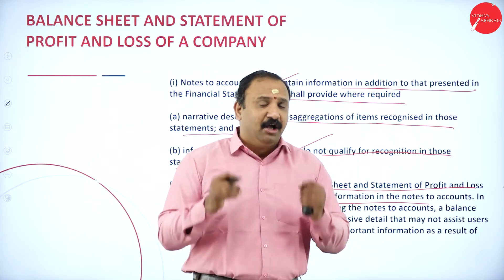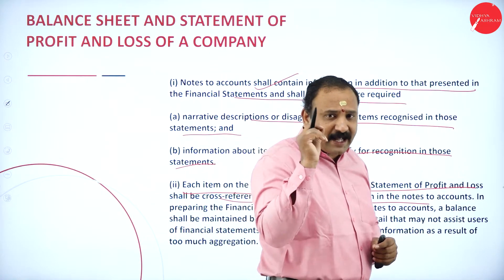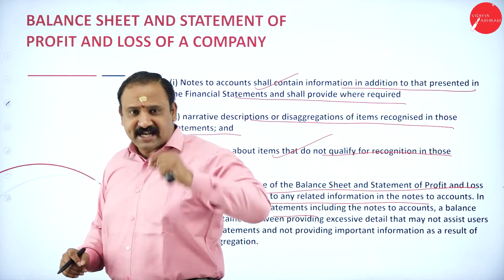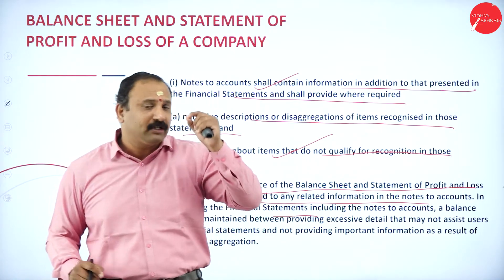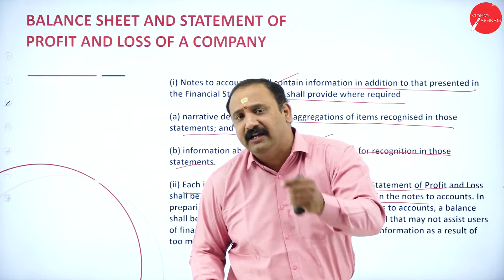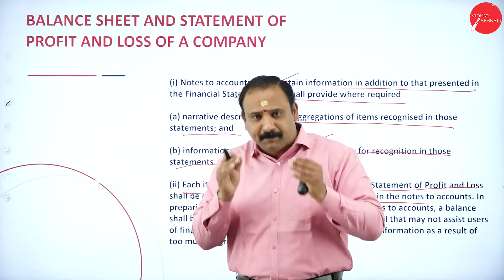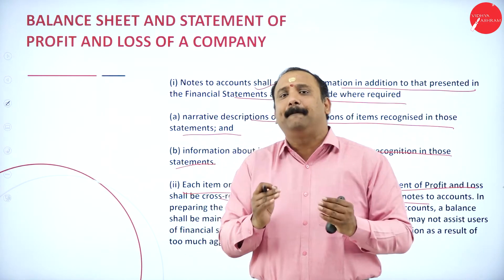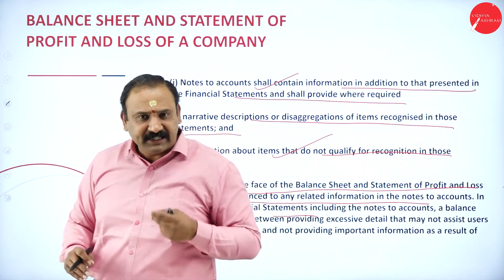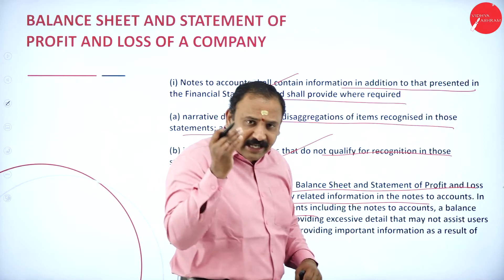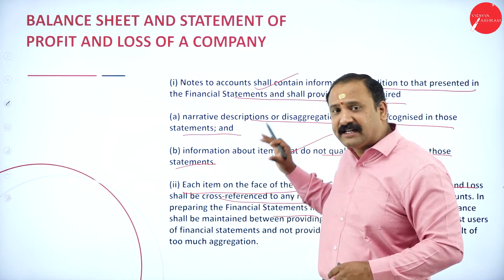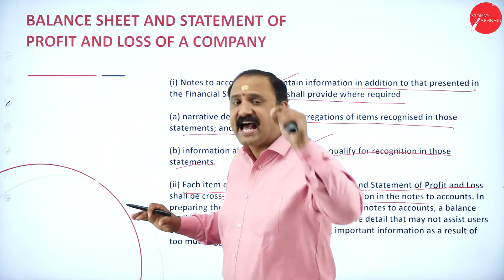Each item on the face of the balance sheet and statement of profit and loss shall be cross-referenced to any related information in the notes, and this has to be maintained. For every company, whenever we are preparing the financial statement, each and every heading has to be checked thoroughly because the balance sheet is the image of the company — its face value. The public, investors, board, and exchanges will be looking at the company's validity, trust, and ethical practices. So all statements presented must be clear, concise, and correct.